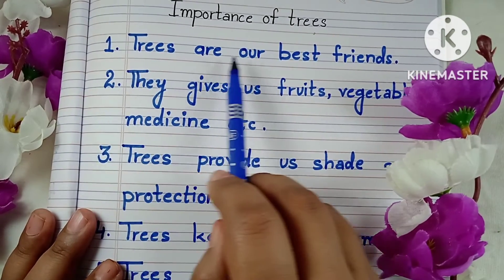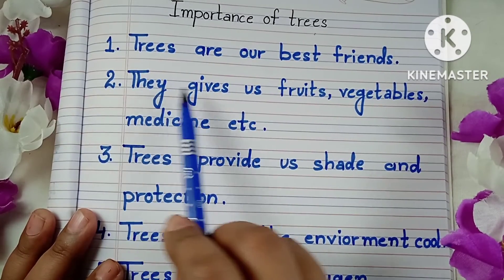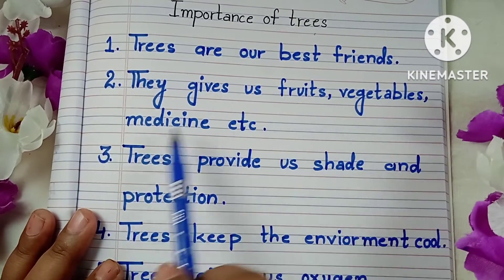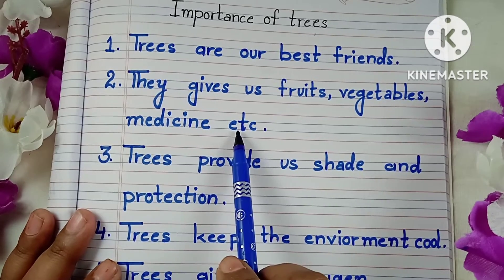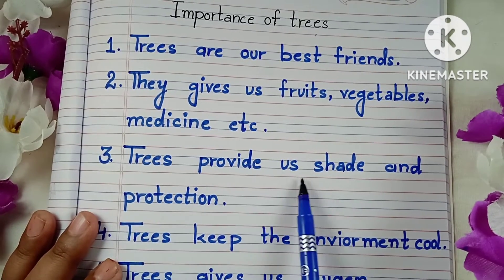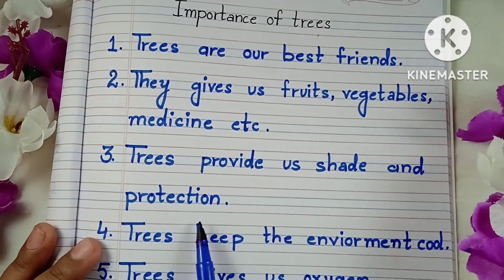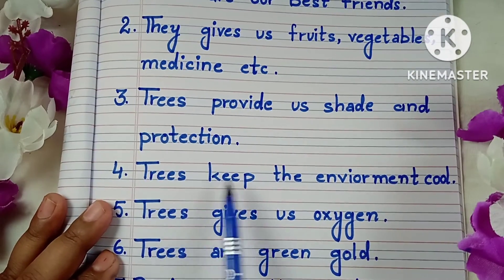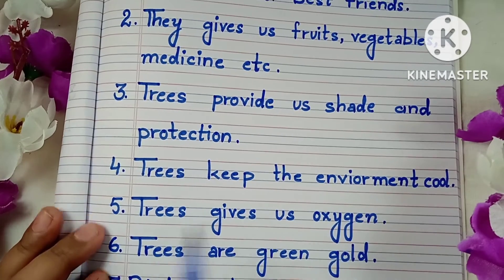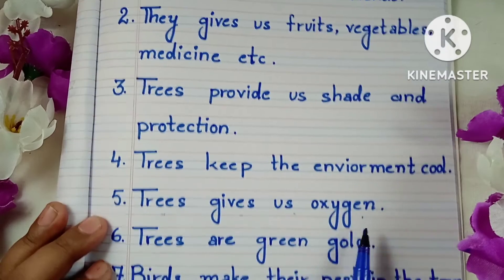Trees are our best friends. Number 2: They give us fruits, vegetables, medicines, etc. Number 3: Trees provide us shade and protection. Number 4: Trees keep the environment cool. Number 5: Trees give us oxygen.